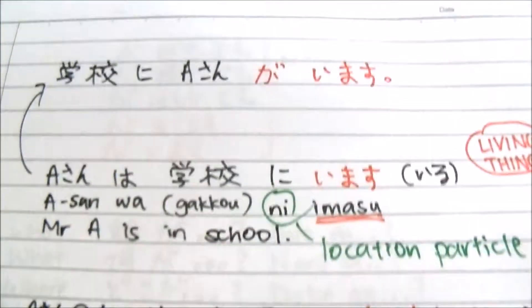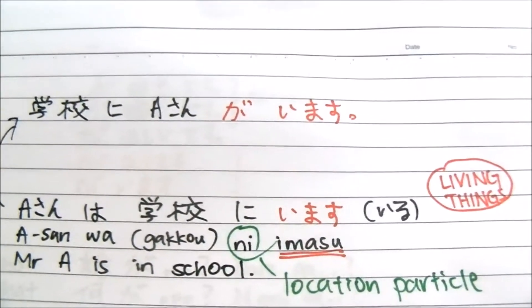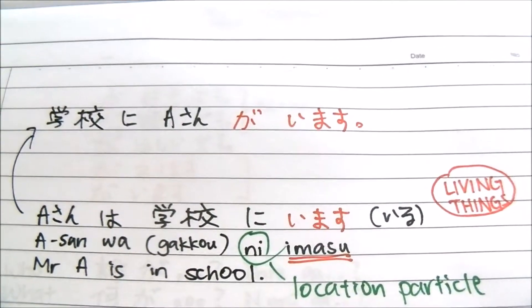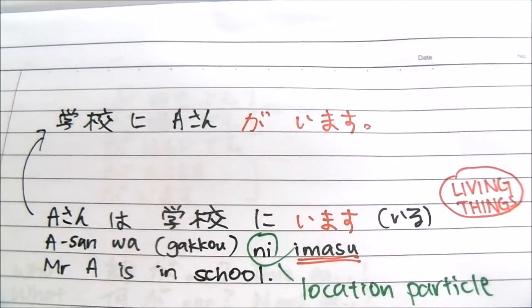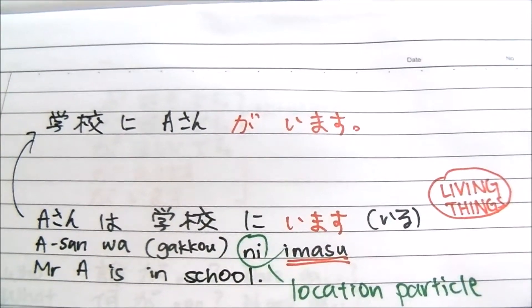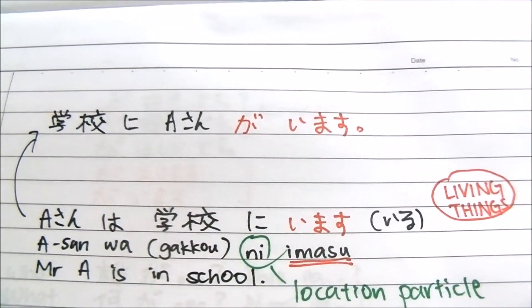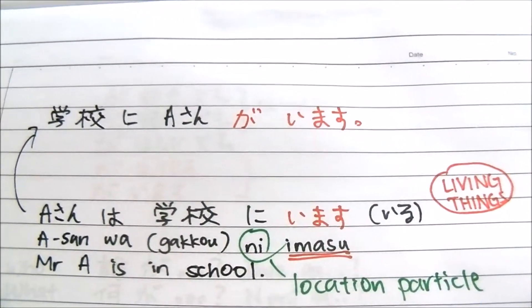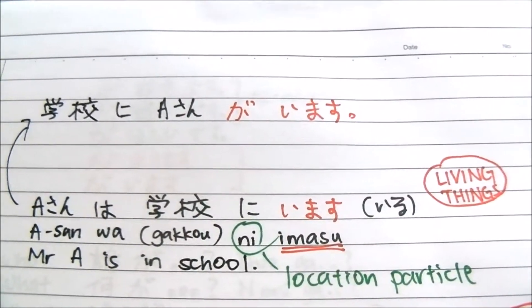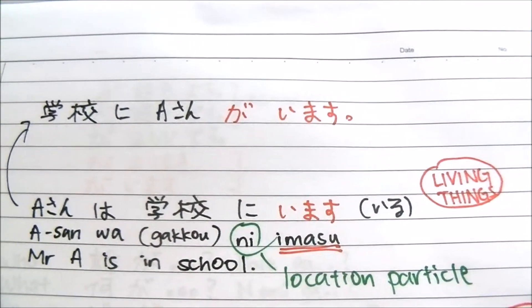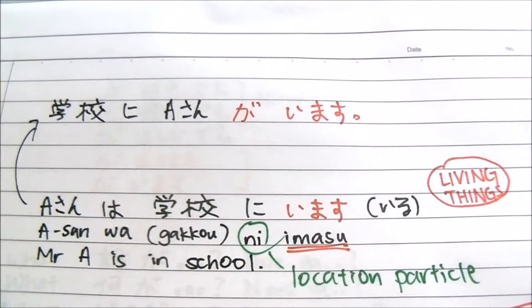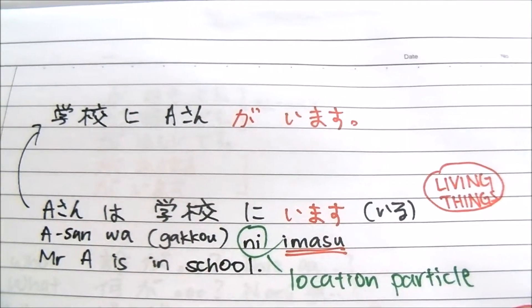Let's look at another sentence structure with 'imasu'. A-san is a person, so he's a living thing. Compare 'A-san wa gako ni imasu' versus 'Gako ni A-san ga imasu'. Both express the same content, but the sentence structure is different. If you ask 'Where is A-san?' — 'A-san wa doko desu ka?' — then you say 'A-san wa gako ni imasu'.